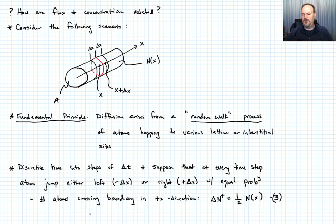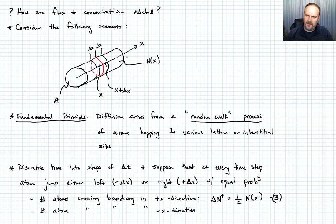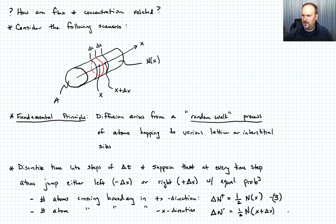Now, the number of atoms crossing the boundary in the negative x direction comes from the volume on the right-hand side. With equal probability, ΔN− equals one-half of the number in that volume: ΔN− = ½ N(x + Δx). Let's call that equation 4.